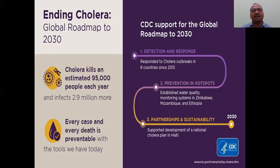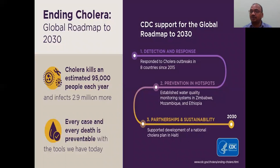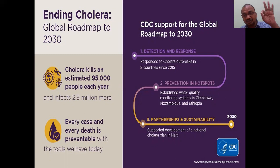This is the ending of cholera - a global roadmap to 2030 for complete removal of cholera from the world. The WHO and CDC have three steps: detection and response, prevention in the hot spots, and partnerships and sustainability. These three steps you have to write in the examination. Cholera kills an estimated 95,000 people each year - nearly one lakh people - and infects three million more. Every case and every death is preventable.